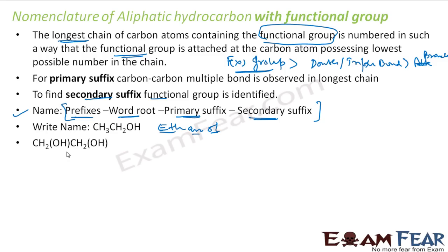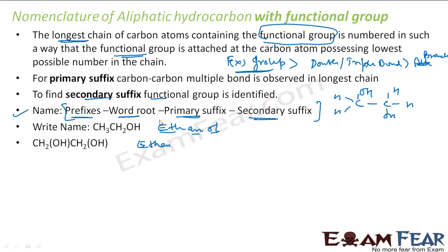Let's take CH2OH-CH2OH. Let me draw this structure. There is an OH here and one more OH here. What is the prefix? There is no prefix because there is no branch here. What is the word root? Two carbons, so ETH. Primary suffix: all single bonds, so it is ethane. Now there are two alcohol groups, so instead of OL we'll use 1,2-diol. So it is ethane-1,2-diol.